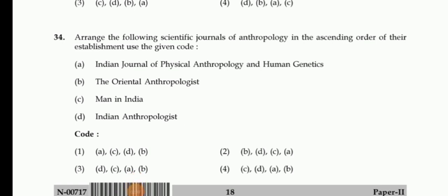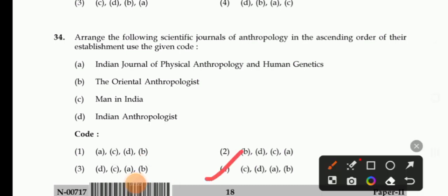Next question on anthropological journals — Indian Journal of Physical Anthropology and Human Genetics, The Oriental Anthropologist, Man in India, Indian Anthropologist. Codes are ACDB, BDCA, DCAB, CDAB. The right answer is 4, so the correct sequence is C, D, A, B.